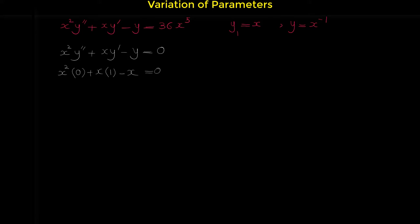Now let's verify whether x to the negative one is also a solution of this homogeneous differential equation. We do the same process. x squared times the second derivative of this function. The first derivative of x to the negative one is negative x to the negative 2 — we bring the power down and subtract 1 from the power. But we need the second derivative, y double prime. The derivative of negative x to the negative 2 is 2x to the negative 3.